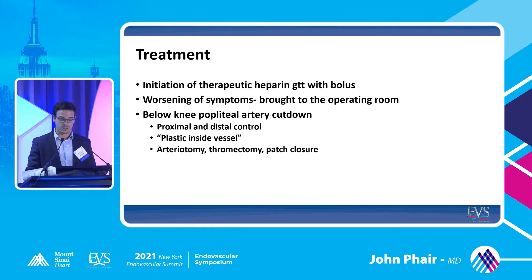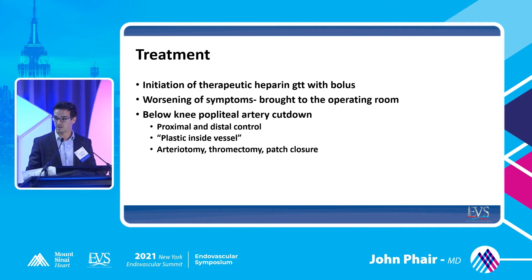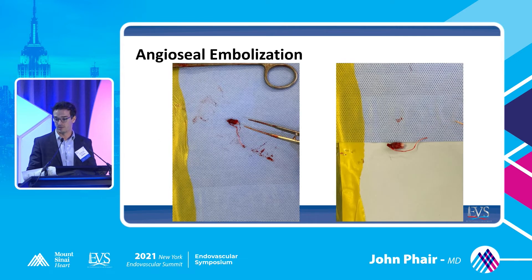We treated this like an acute limb — started the patient on therapeutic heparin with a bolus. With worsening symptoms, we brought the patient to the OR and did a femoral-popliteal artery cut down with proximal and distal control. We expected to see fresh clot — this is a vascular patient with coronary disease, maybe some AFib. But after proximal distal control was obtained, we palpated on the vessel and instead of feeling a soft vessel with fresh clot, there was something with a plastic feeling inside. So instead of a transverse arteriotomy, we did a longitudinal arteriotomy and saw an angioseal lodged into the popliteal vessel. These closure devices damage the intima when sent down into the vessels, so endovascular means really don't work — you have to cut down, repair the vessel, and tack down the plaque.